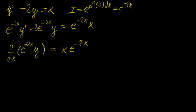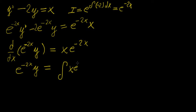To find y, we need to get rid of the differential operator on the left, and to do so we integrate both sides with respect to x. On the left we are left with e^(-2x) · y, and the right becomes the integral of x · e^(-2x) dx. To evaluate this integral, we use integration by parts.